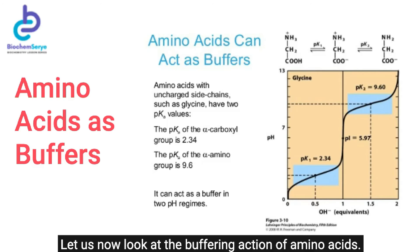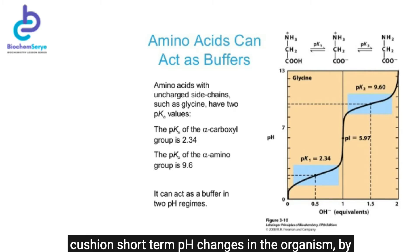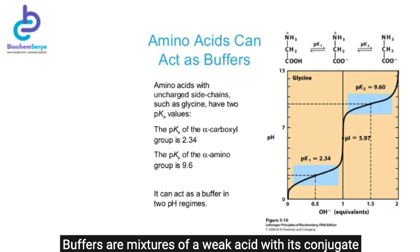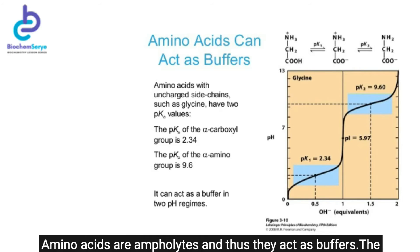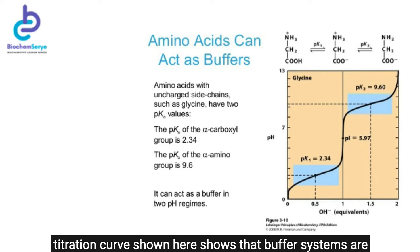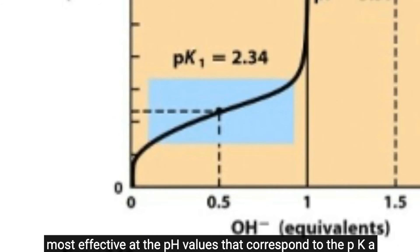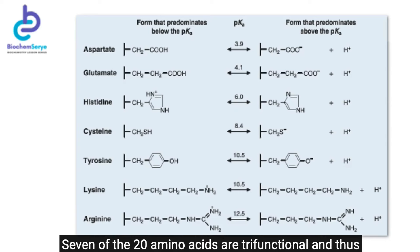Let us now look at the buffering action of amino acids. Buffers are important because they cushion short-term pH changes in the organism by resisting change in pH when an acid or alkali is added. Buffers are mixtures of a weak acid with its conjugate base or of a weak base with its conjugate acid. Amino acids are ampholytes and thus act as buffers. The titration curve shows that buffer systems are most effective at pH values corresponding to the pKa of the ionizable group.